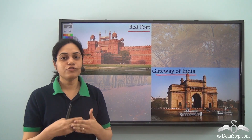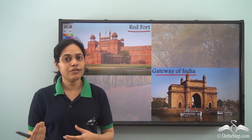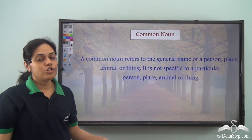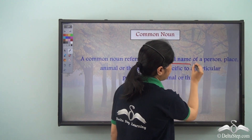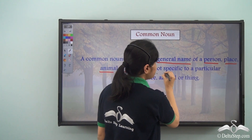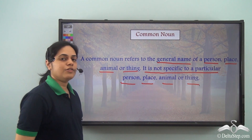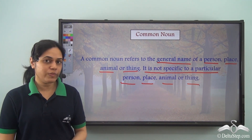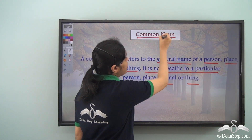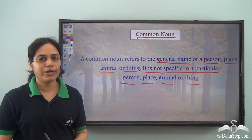So nouns can be of two types: one which describes general names and the other which describes specific names. A common noun is the general name of a person, place, animal or thing. It is not specific to a particular person, place, animal or thing. So words like monuments, which are not specific but are general names, are called common nouns. So the word monuments is a common noun.